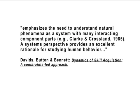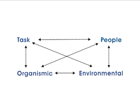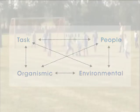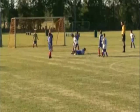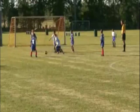Dynamical systems theory emphasizes the need to understand natural phenomena as a system with many interacting component parts. Constraints are a fundamental part of this theory — they both limit and enable behavior and can be either physical or informational. With that point in mind, I'll modify the dynamical systems model to include people. This change takes into account that soccer must contain direct human interaction while other activities in sports may not.